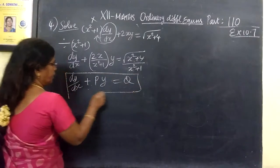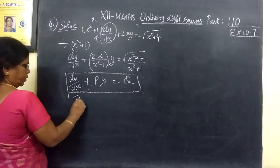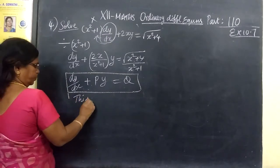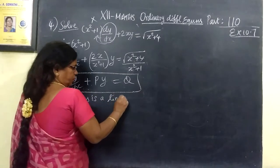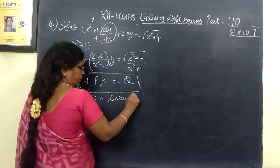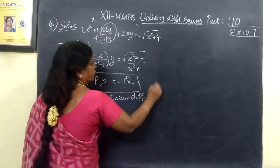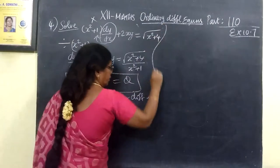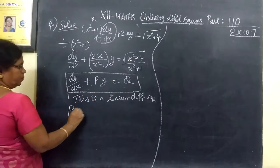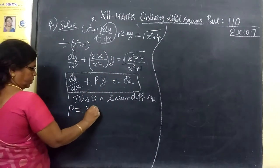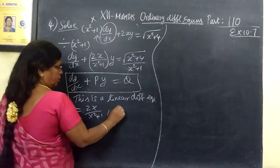How do we compare? Divide by dx plus Py equal to Q. This is a linear differential equation. So what do we compare?